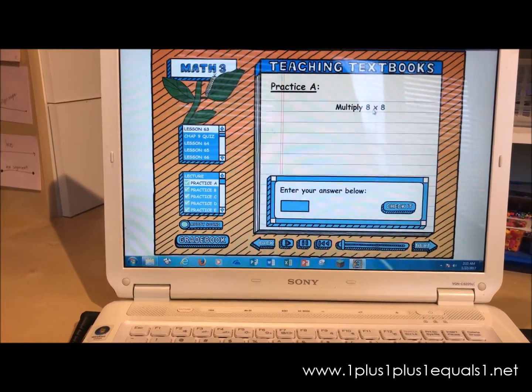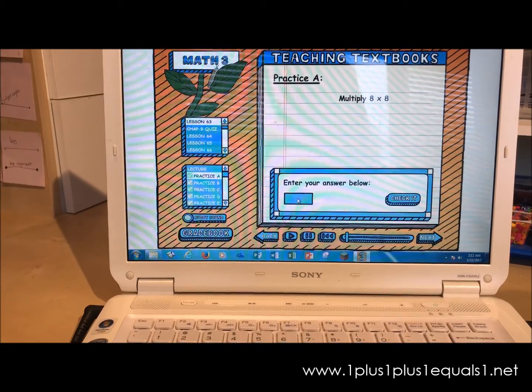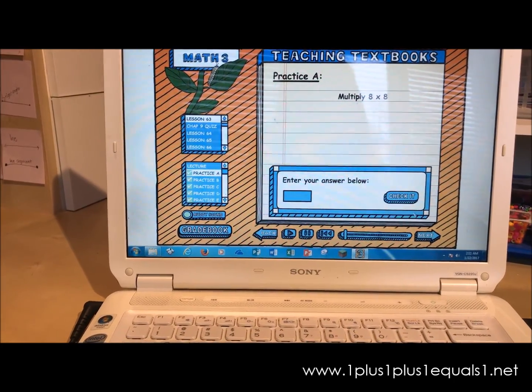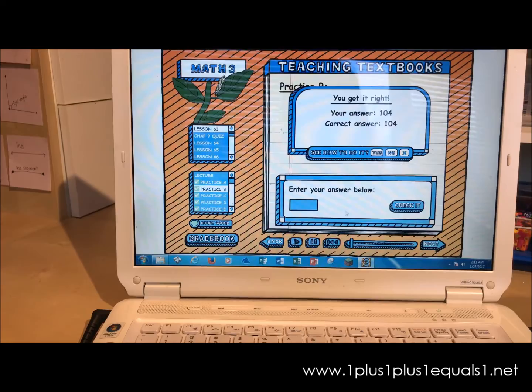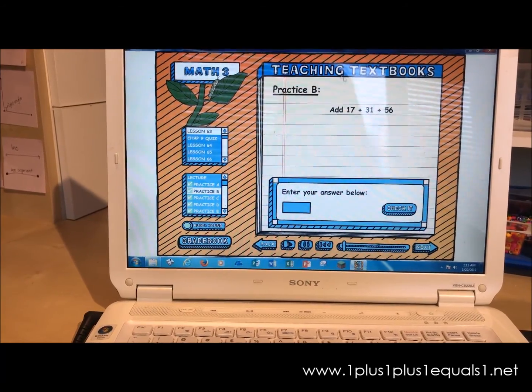And see, she's already done this. So 8 times 8, you enter your answer down there and click check it. And it shows you right away. So you can see, like I said, she's already done this.